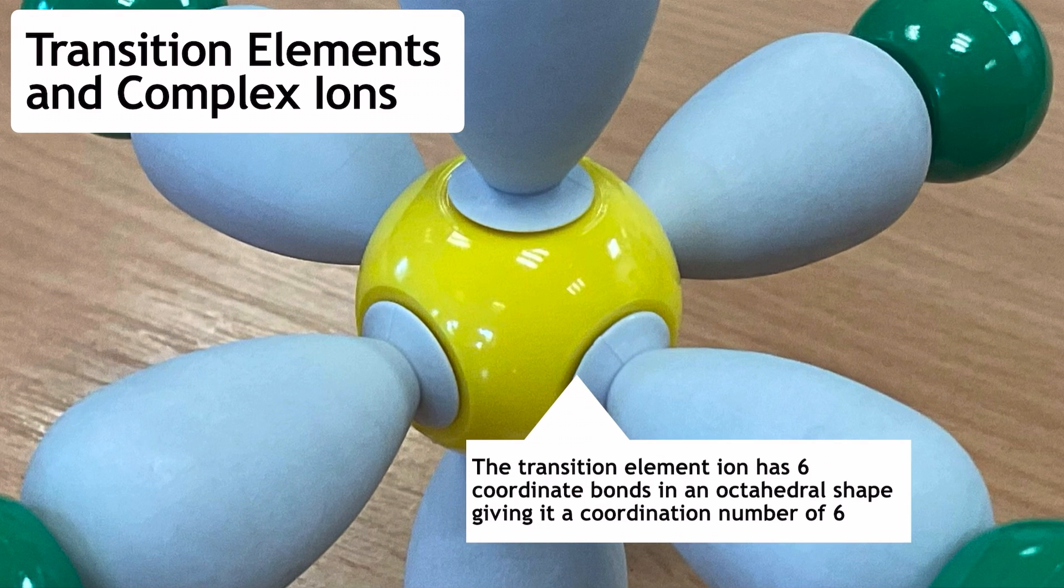At the very core of things, like I said, there's a transition element ion. Now here, this particular one has an octahedral shape around it, and that means that it's got a coordination number of 6. The coordination number describes the number of coordinate bonds to the transition element ion at the center of the complex ion structure. If this was a tetrahedral complex ion, then we would say the coordination number was 4, for example.